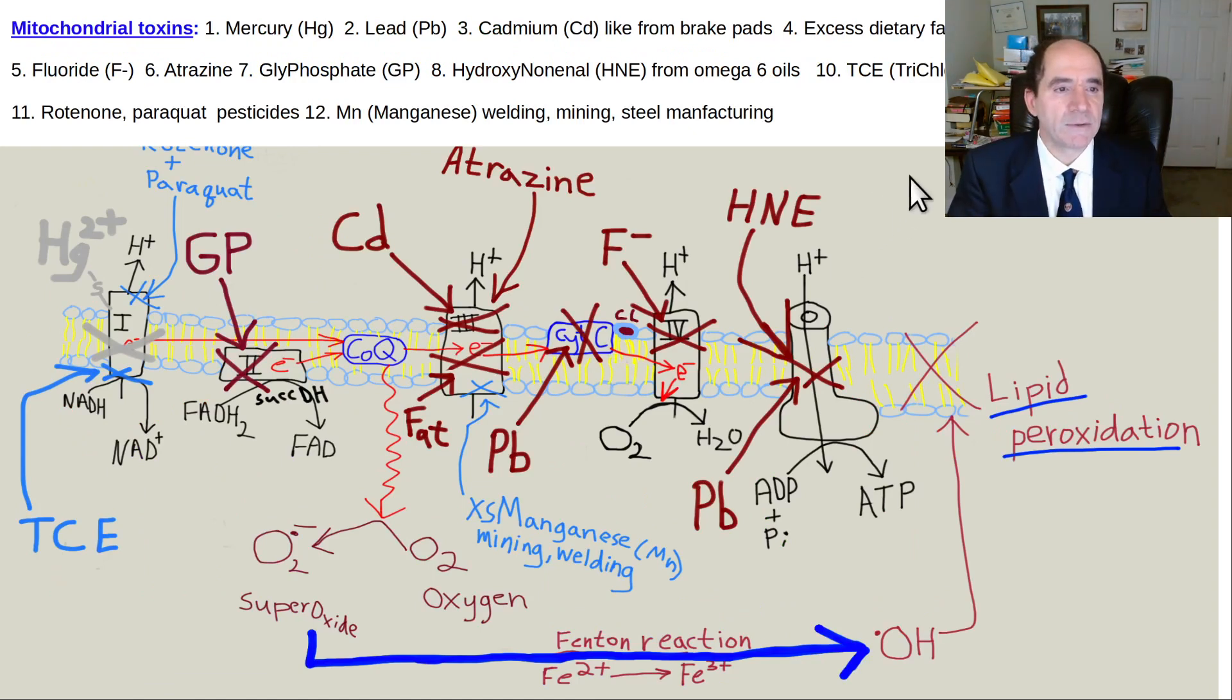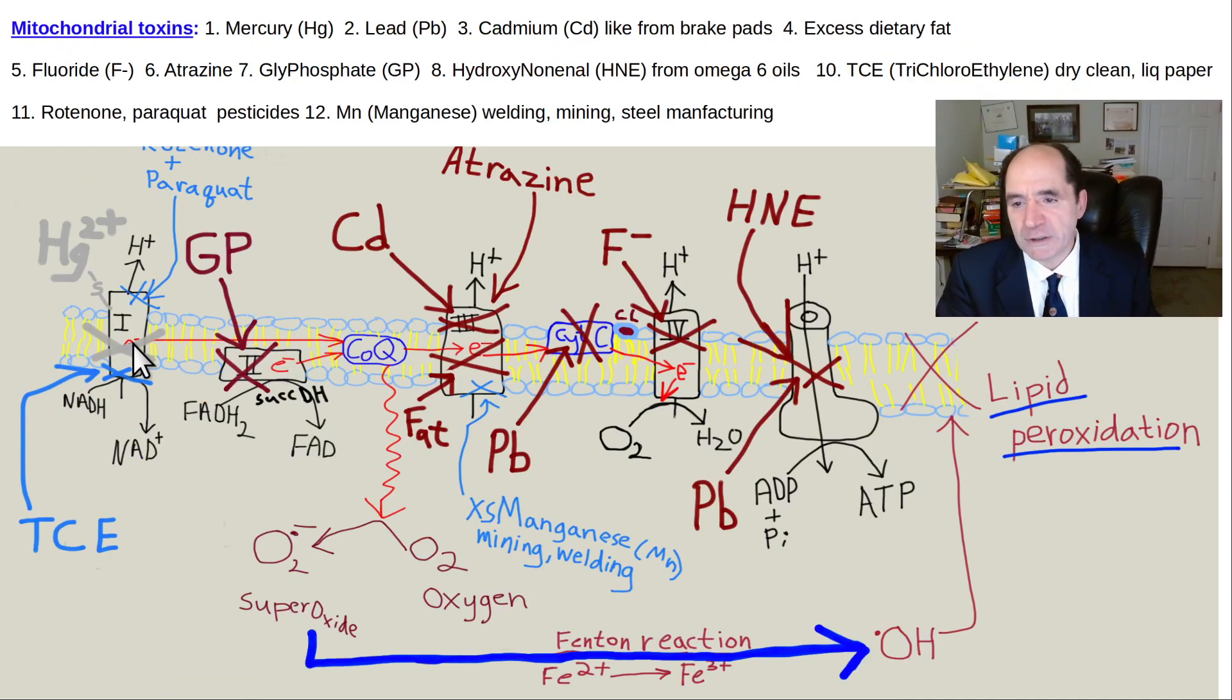Here's that final slide, which is the first slide from this lecture in the beginning. Here's your TCE taking out complex one. HG can also take out complex one. Some of these pesticides can take out complex one. GP on the non-organic soy damages complex two. Dietary fat excess, that's the most common thing we think of as inhibiting mitochondrial function, damages complex three. Cadmium, especially in non-organic food, damages complex three. Atrazine, sprayed on the corn, damages complex three. F-minus in a lot of city water damages complex four. PB is lead, that can damage cytochrome C and also ATP synthase. Hydroxynonenal from the omega-6 fats will damage ATP synthase. Excess iron can lead to accumulation of free radicals, hydroxyl radicals with lipid peroxidation. The point I'm saying is, no matter what you do, you're exposed to some of this. So, the smart move is minimize all this other stuff to the extent you can.